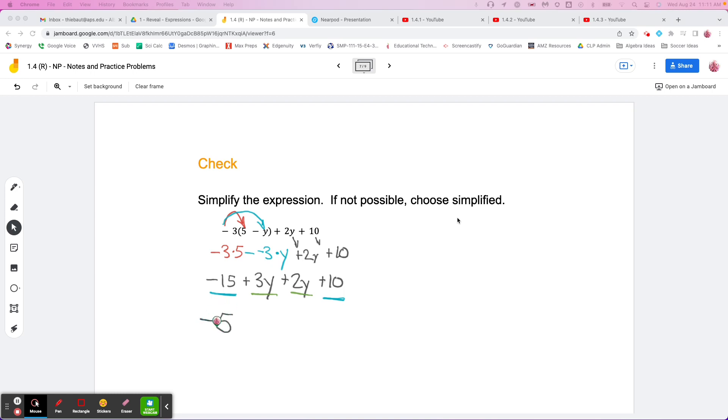So you get that. Then I'm going to do this one and this one, the 3y and the 2y. Remember, just add the coefficients. I have 3 y's and I add 2 y's to it, so then I would get positive 5 y's.